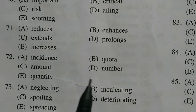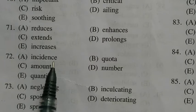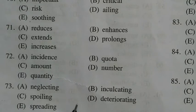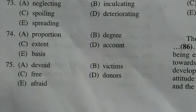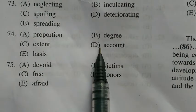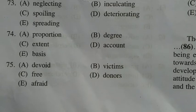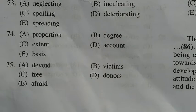The answer to question 72 is A: the increasing 'incidence' of heart attack in India. The answer to question 73 is E: fast 'spreading' among younger generations. The answer to question 74 is D: largely 'on account' of smoking habits. The answer to question 75 is B: nearly 30 million people in the country are estimated to be 'victims' of heart disease.